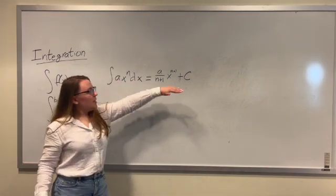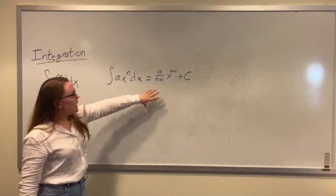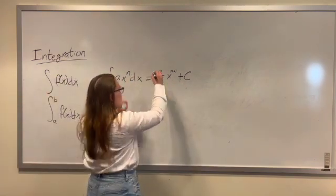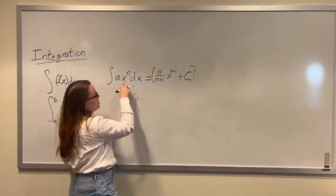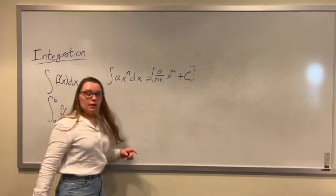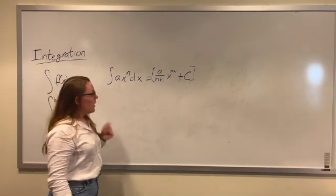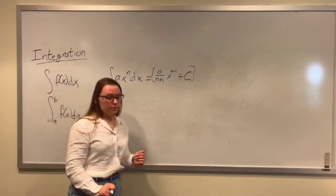And now this c represents a constant because if we take the derivative of this function, this c will become zero and so it won't show up over here. So we always need to add c in case there is a constant at the end that we just don't know of because the derivative gets rid of it.